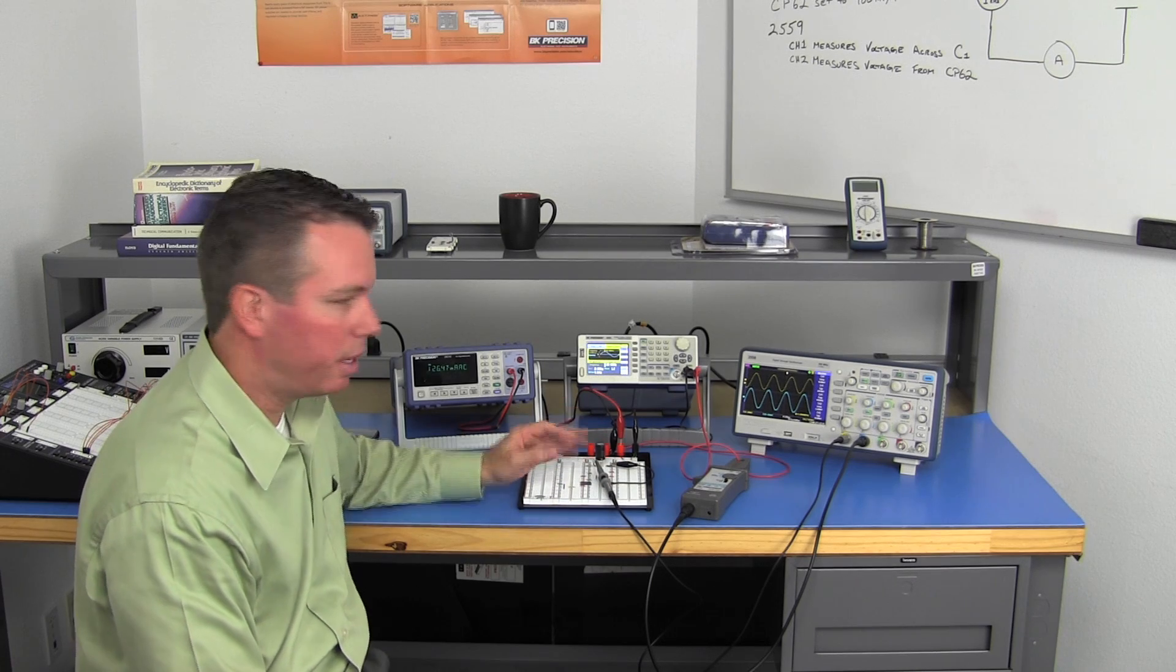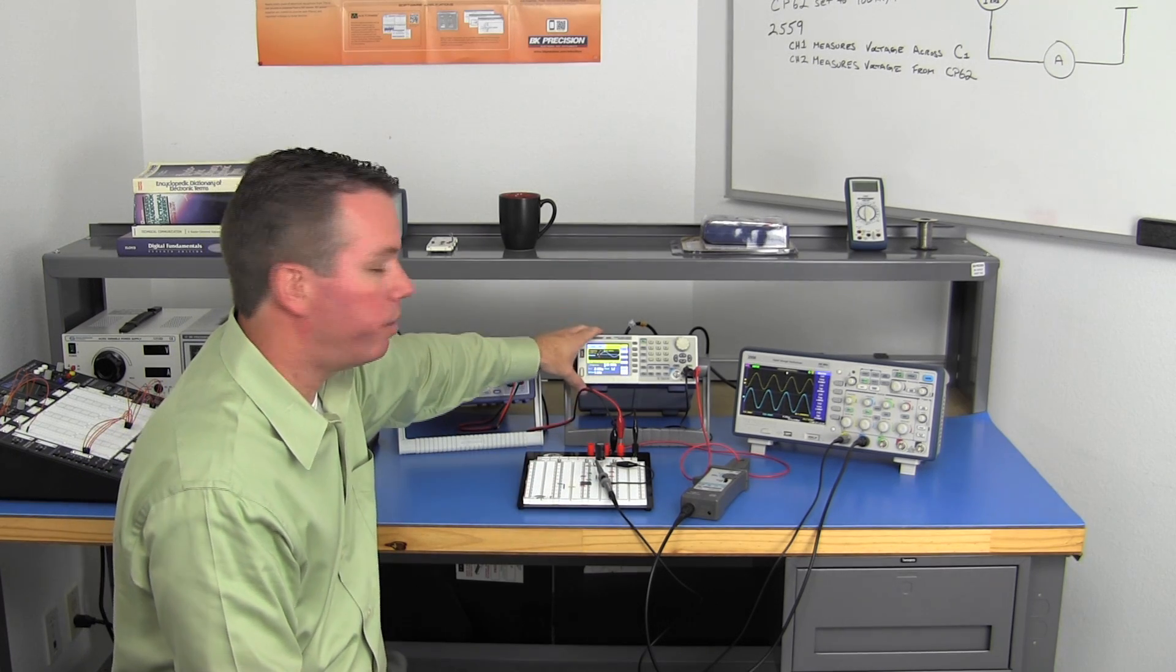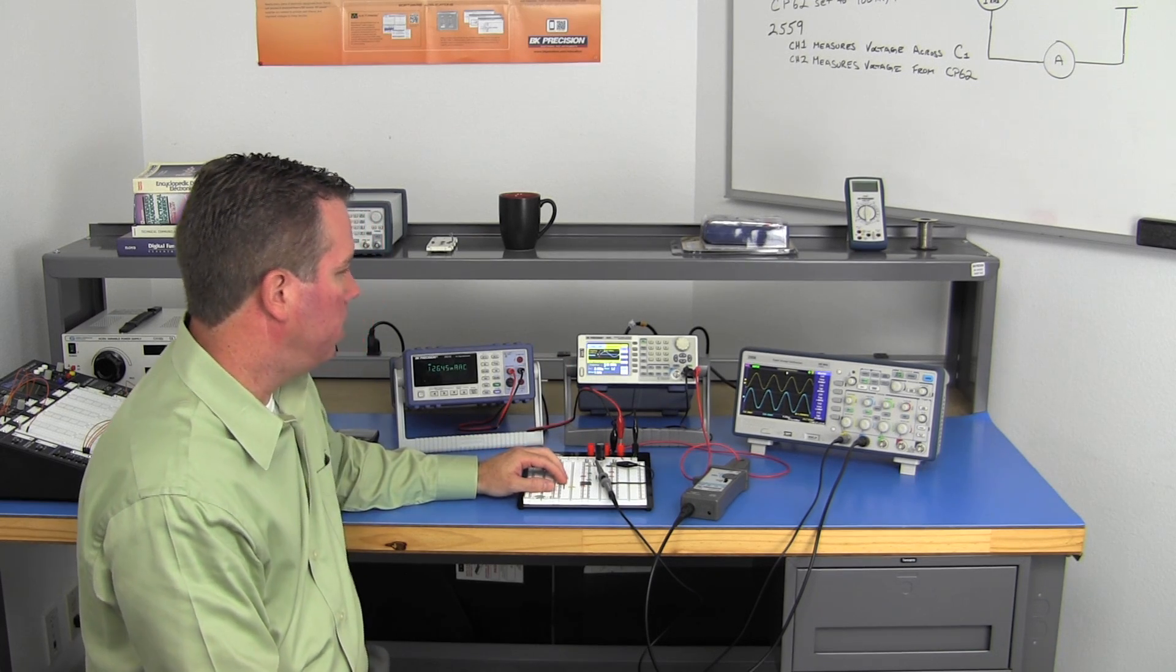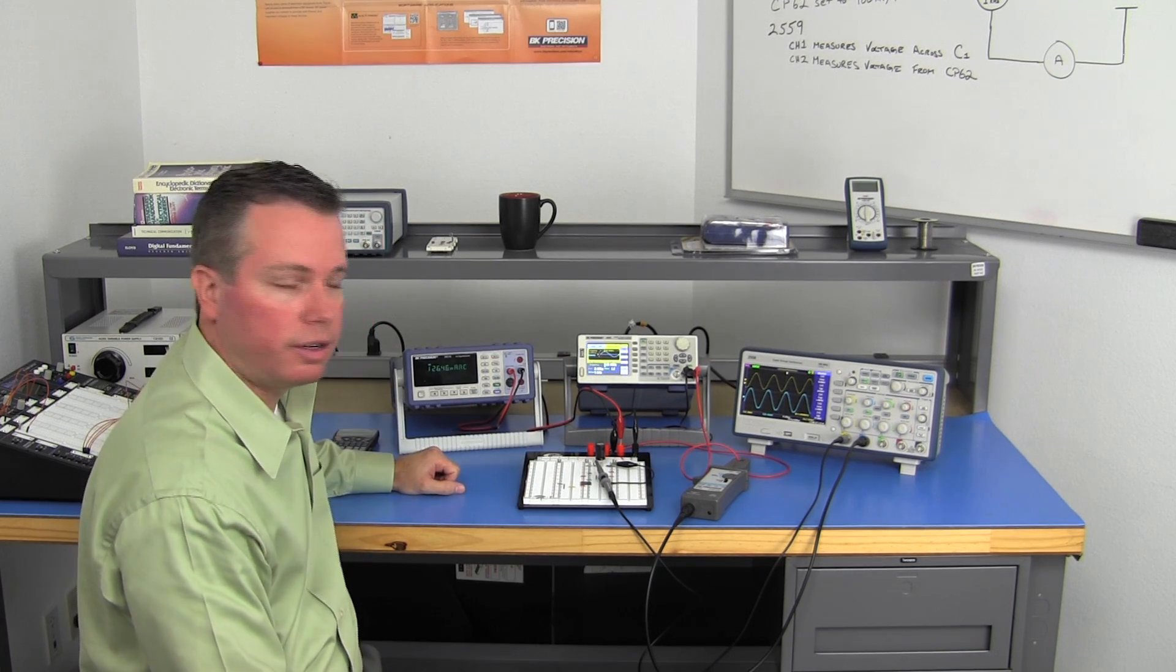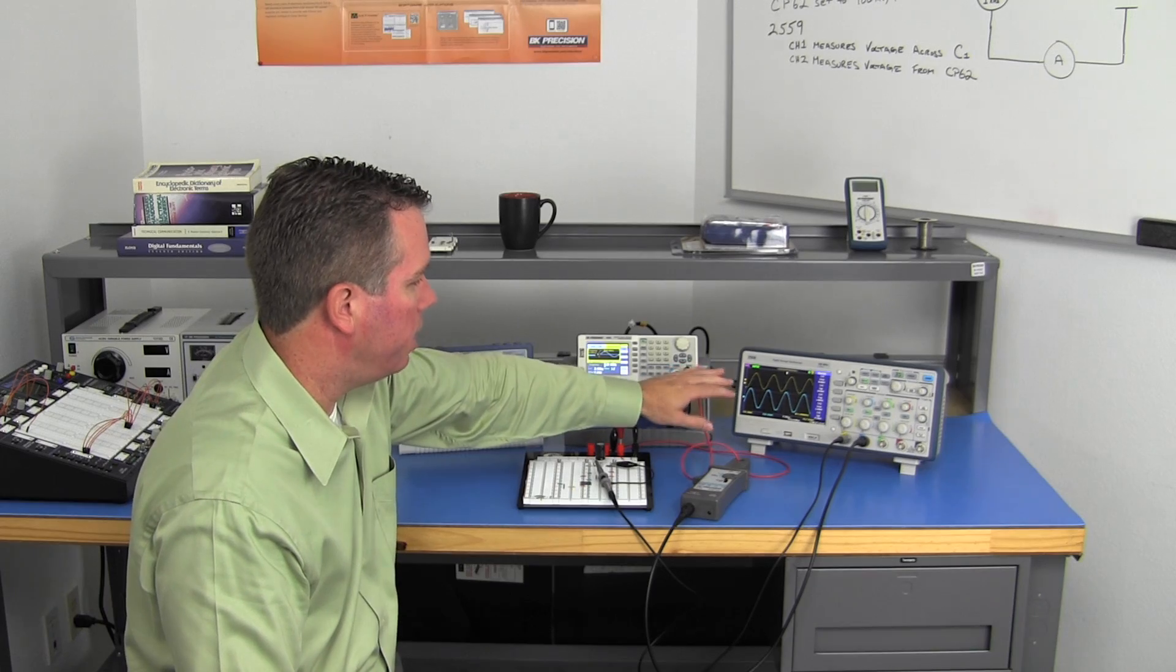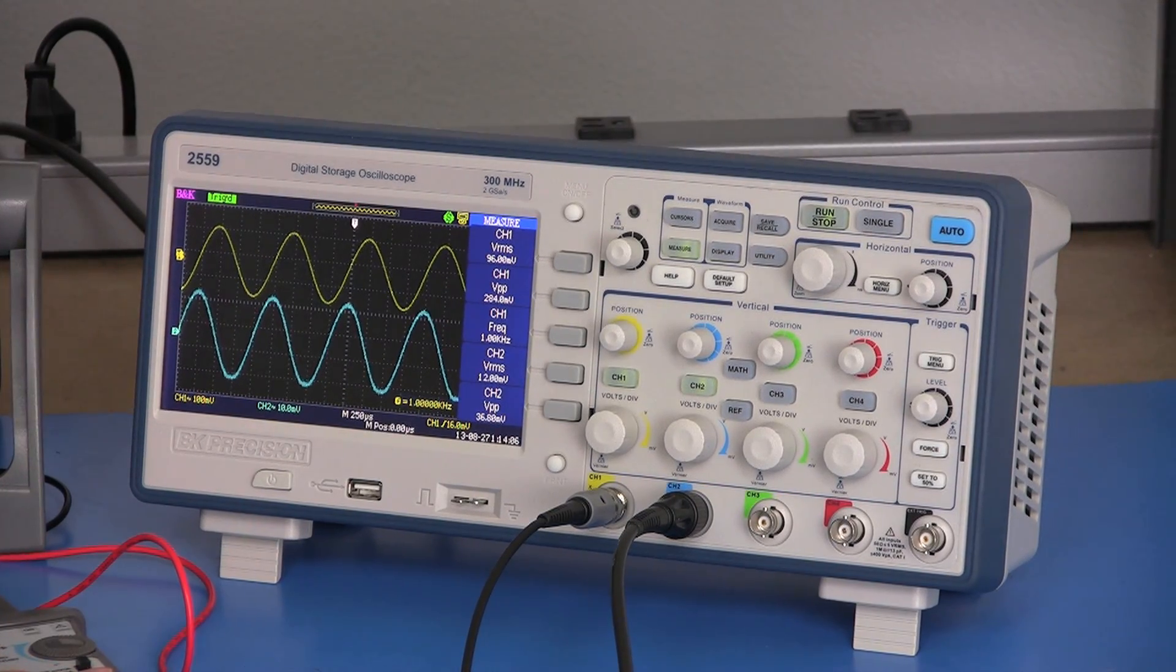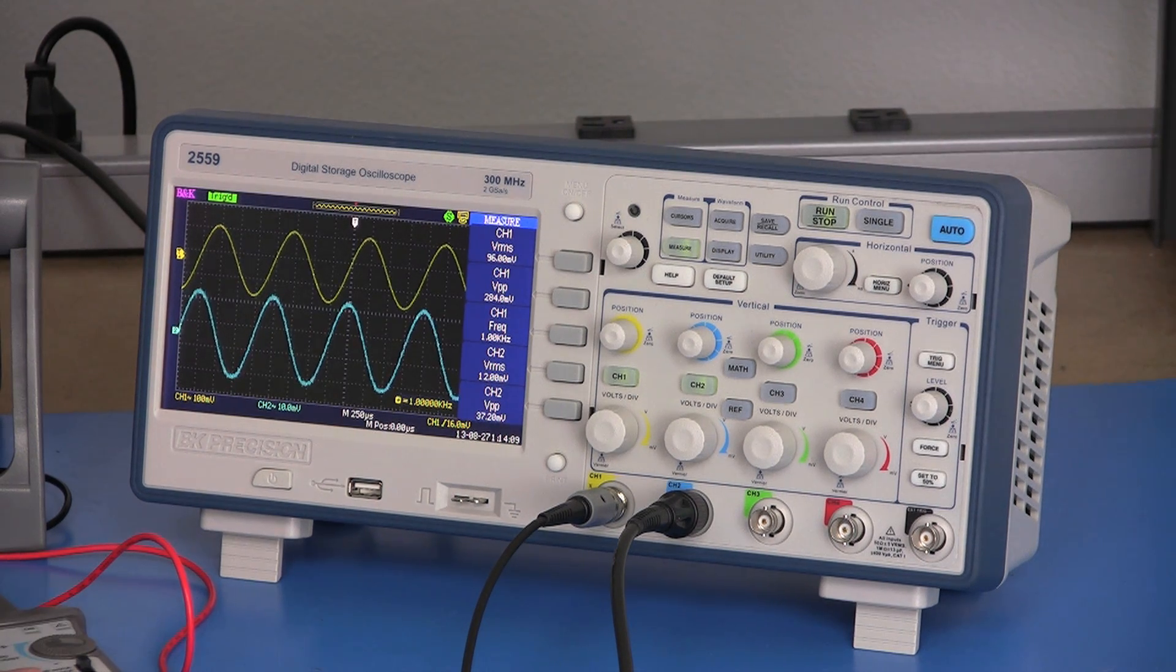So to illustrate this application, I've got a function generator here outputting a basic sine wave through a circuit. I've got the multimeter in series. And the 2559 oscilloscope, I've got channel 1, which is the yellow trace. It's measuring the voltage from this probe across the capacitor.